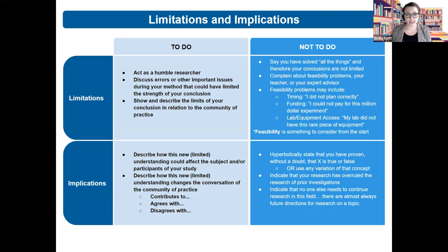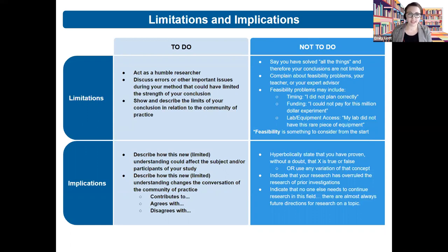The things you should do when writing your implications are to describe how this new and limited understanding could affect the subject and/or participants of your study. You should also describe how this new and limited understanding changes the conversation of the community of practice — this could include how your information contributes to, agrees with, or disagrees with the community of practice. But there are some things you should not do: do not hyperbolically state that you have proven without a doubt that something is true or false. Do not indicate that your research has overruled the research of prior investigations. And do not indicate that no one else needs to continue research in this field — there are almost always future directions for research on a topic.